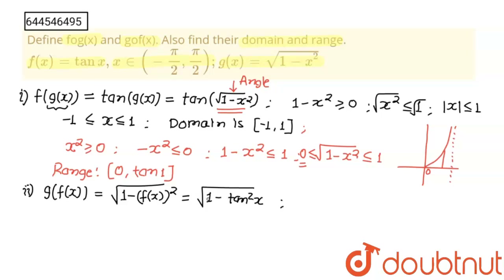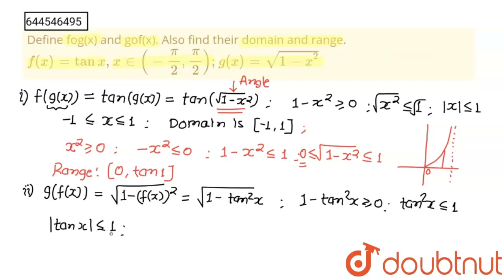From g(f(x)) = √(1 - tan²x), for the domain we need 1 - tan²x ≥ 0. This gives tan²x ≤ 1. Taking square root: |tan x| ≤ 1, which means -1 ≤ tan x ≤ 1. From this we get -π/4 ≤ x ≤ π/4. So the domain of g(f(x)) is [-π/4, π/4].